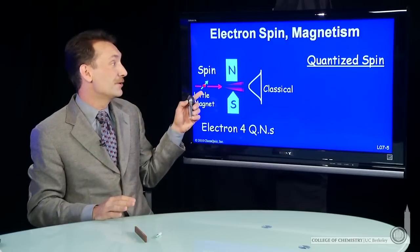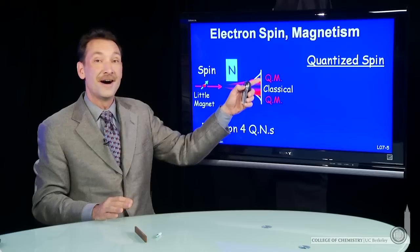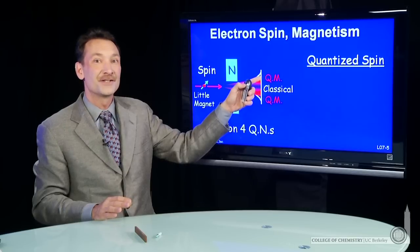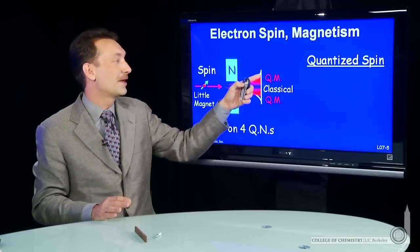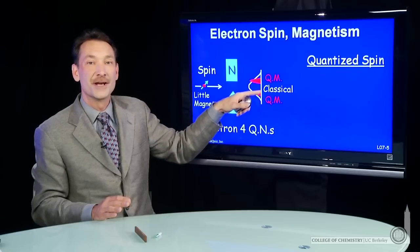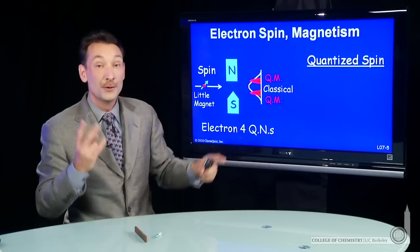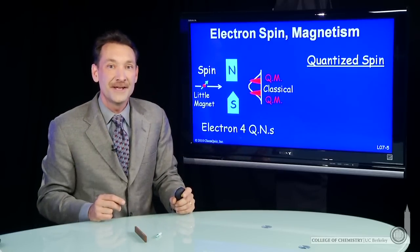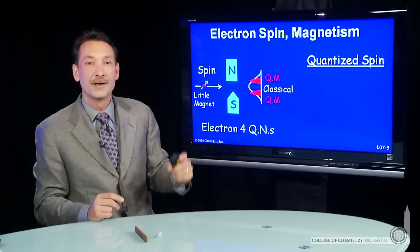So when you do this experiment, you get a group of electrons. The ones that were spin up end up and give you a bright spot here. The ones that were spin down give you a bright spot here. Two possible orientations of the magnetic field for electrons.